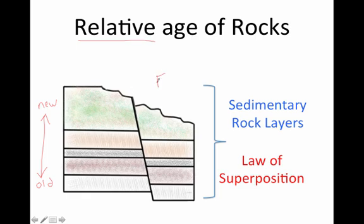Also on this drawing there's a fault. If you remember from sixth grade earth science, a fault is a crack in the earth's surface. In this case we can also look at the relative age of this fault. If you take a look at it, the layers were clearly here before the fault shifted them, so the fault happened last, which means it's newer. That's how we figure out the relative age of sedimentary rocks. When you have horizontal layers, the one closest to the bottom is the oldest and the one at the top is the newest — that's called the law of superposition.